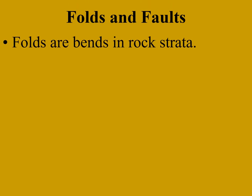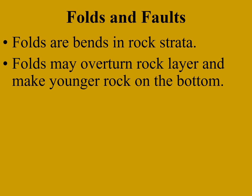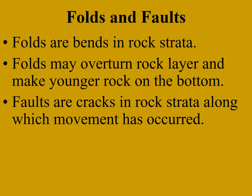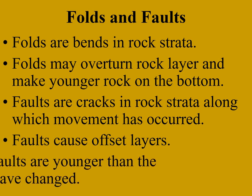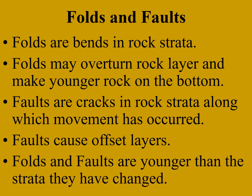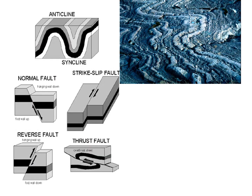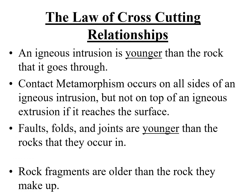Folds and faults. Folds are bends in rock strata. Folds might overturn a rock layer — they might even make younger rock appear on the bottom. Geologists always have to prove that the rock was not folded. Faults are cracks in rock strata along which movement has occurred. Faults cause offset layers. But all of these things have to be younger than the strata that they have changed. These are the different kinds of faults: normal, reverse, thrust, and strike-slip — and they all leave evidence in the rock.